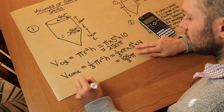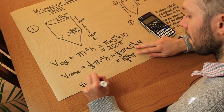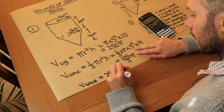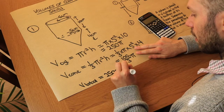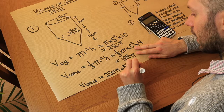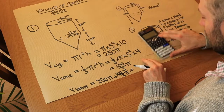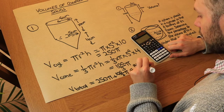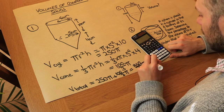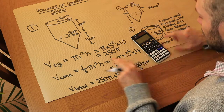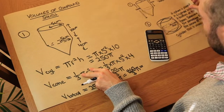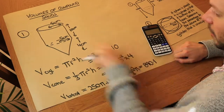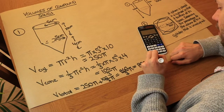The total volume is just the sum of those two: 250π plus 100/3 π, which equals 850/3 π. Pressing the SD key on the calculator gives 890.1 centimeters cubed.